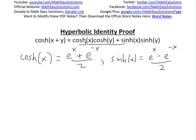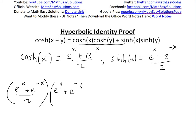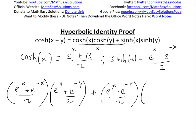So cosh of x equals e to the x plus e to the negative x, divided by 2. Multiply it by cosh of y, which is the exact same thing but with a y: e to the y plus e to the negative y, divided by 2. Then we add sinh of x, which is e to the x minus e to the negative x divided by 2, multiplied by sinh of y, which is e to the y minus e to the negative y, divided by 2.